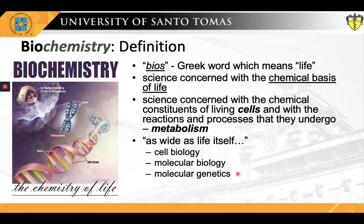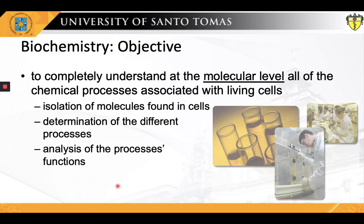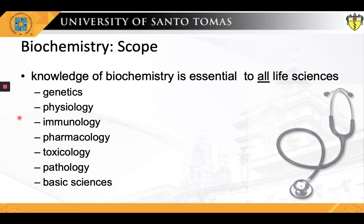The objective of biochemistry is the complete understanding at the molecular level of all of the chemical processes associated with living cells. Biochemistry and molecular biology represent the study of the structures and processes that form the foundation for all living matter. They draw on techniques from biology, chemistry, and physics, providing a key interface between these fields. Biochemists and molecular biologists investigate all forms of life, such as viruses, bacteria, yeast, fungi, plants, and animals. Much of this research examines life at the cellular and subcellular levels. To achieve this objective, biochemistry involves the isolation of molecules found in the cells, then determining their different processes, and analyzing the functions of these processes. The scope of biochemistry is diverse and has been proven to be essential to the life sciences as well.